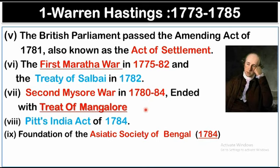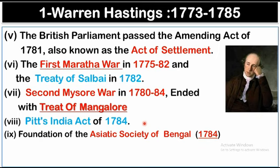The First Anglo-Mysore War was fought between 1767 to 1769, and Hyder Ali was the winner. In the Second Mysore War, from 1780 to 1784, Hyder Ali died due to cancer in 1782, and the Treaty of Mangalore was finally signed between Tipu Sultan and Warren Hastings. Under his rule, the Pitt's India Act was passed in 1784, which divided company functions into two parts: administrative function covered by the Court of Directors and commercial function by the Board of Control. The Asiatic Society of Bengal was also founded in 1784.